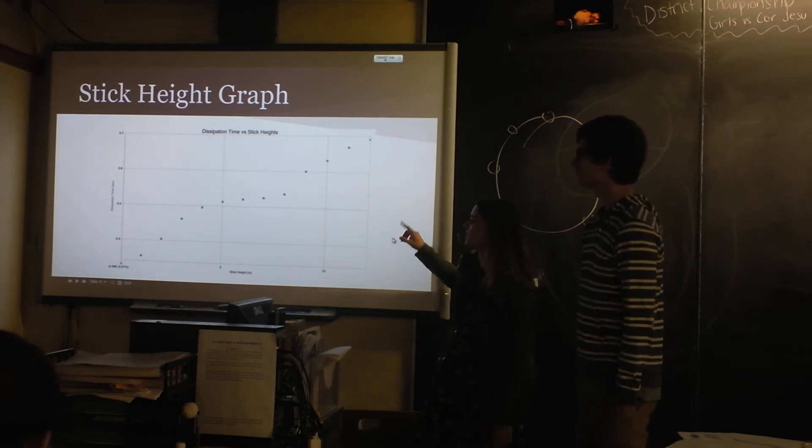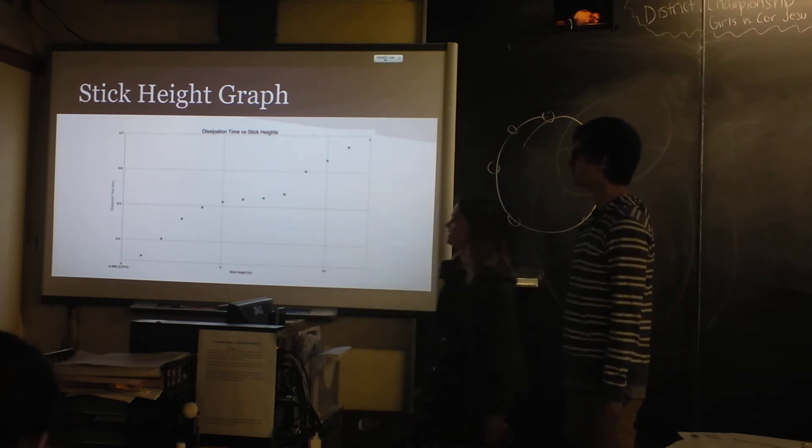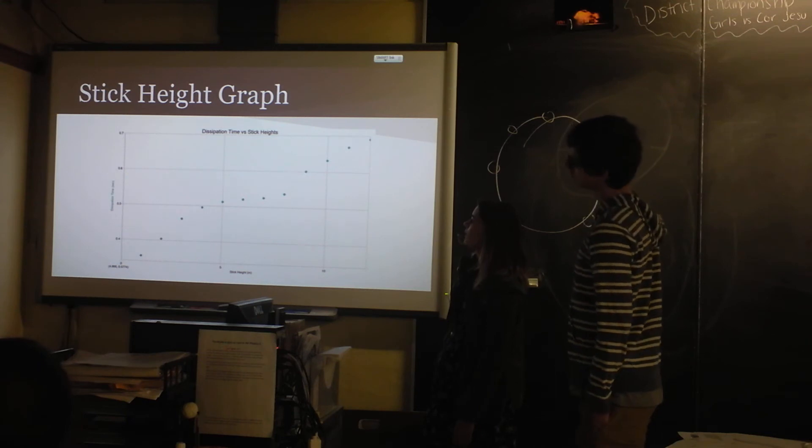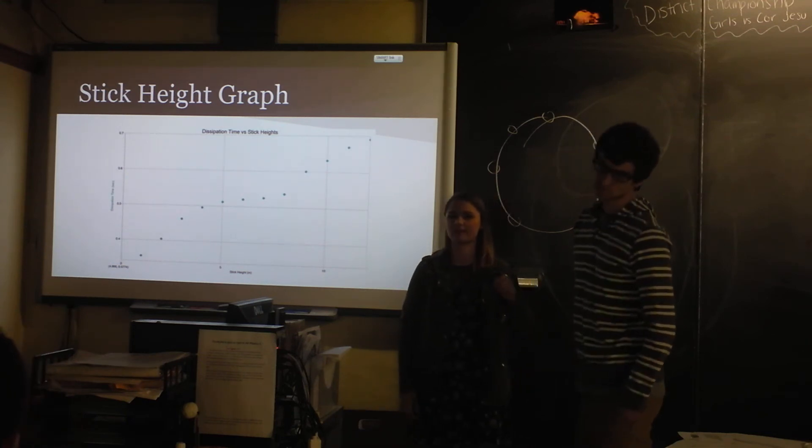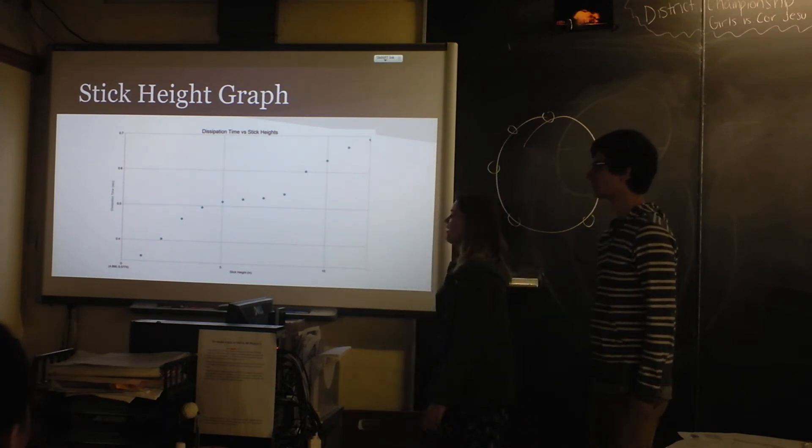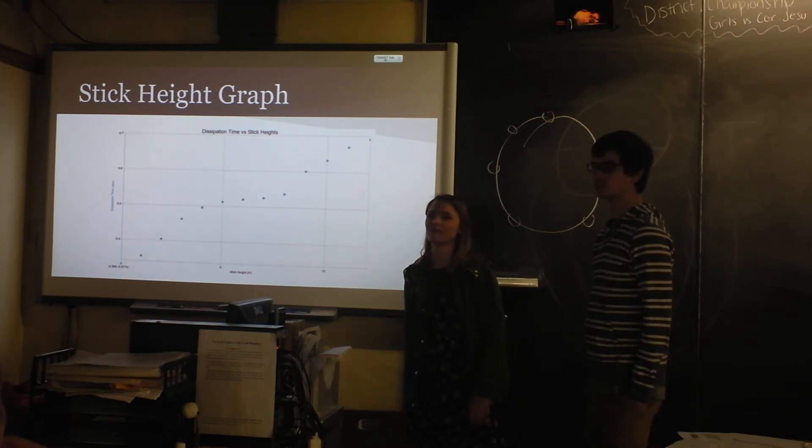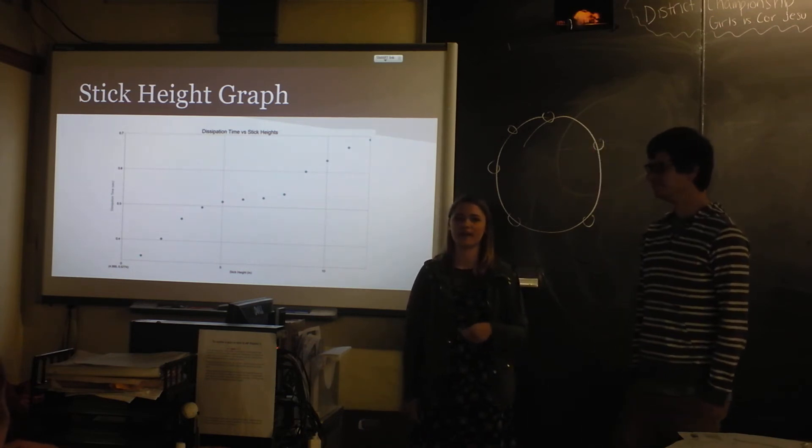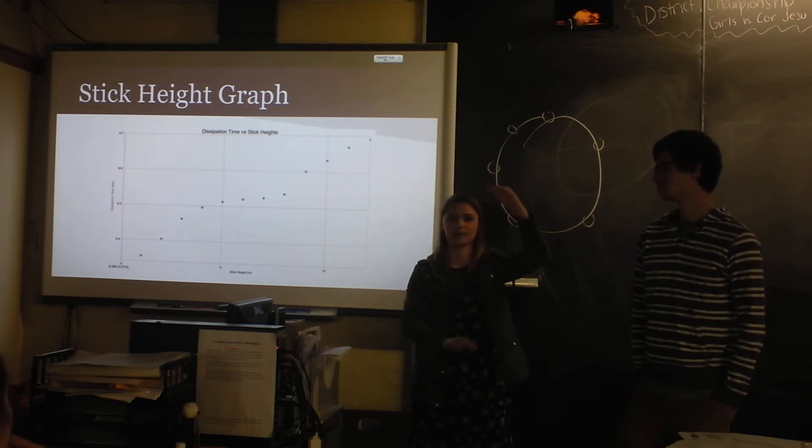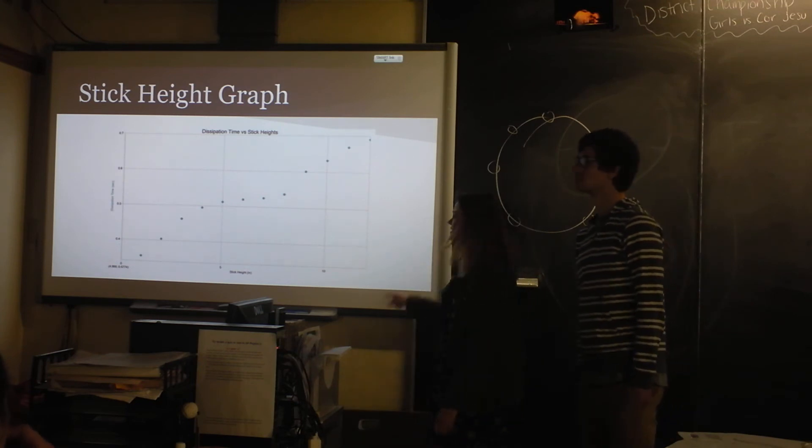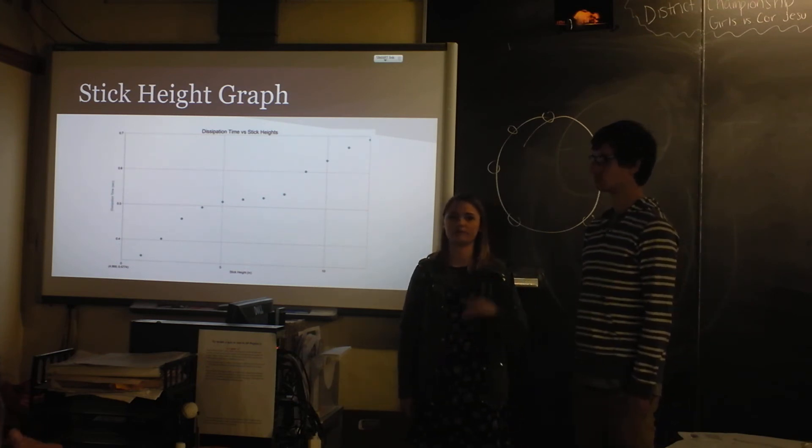And then we did a stick height graph. So basically we found the dissipation time per stick height and then we graphed that. And the dissipation time increased when we increased the stick height from like one inch off the head, two inches, up to 12 inches off the head. Which is really hard to do. You never really do that. But the dissipation time increased. The amplitude didn't change that much because once you get up to like five inches, it sounds pretty much the same. But since you have to apply more force to the snare drum head in order to get the drum from up here to down here, we found that as we had to increase the force, the dissipation time increased. Because there was more energy going to the head, so it vibrated for longer.